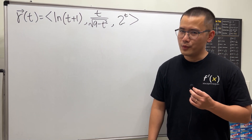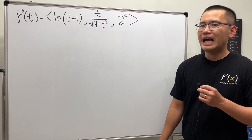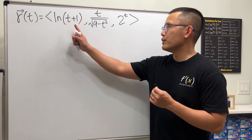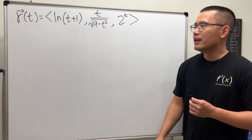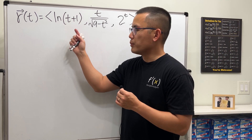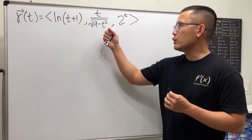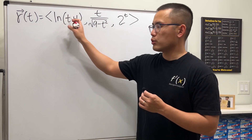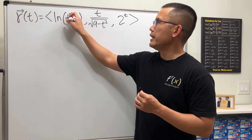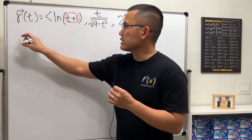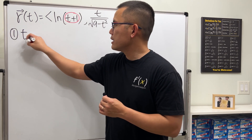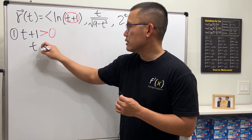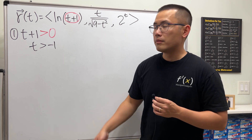Do you remember how to find the domain? Well, in this case, even though we have a vector function, to find the domain it's pretty much the same thing — it's just that we have three components. First, look at each component and set the restriction for t. Starting with the first one, we see that we have a natural log, so the input has to be greater than zero. That means t plus one has to be greater than zero, so t has to be greater than negative one. That's our first condition.